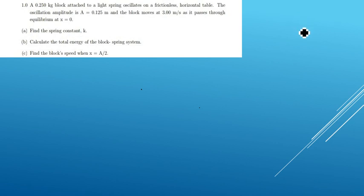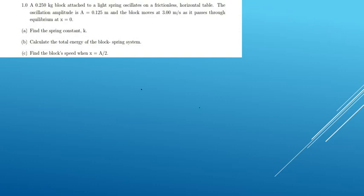Welcome to another tutorial. Today we'll be solving a question in physics under simple harmonic motion, seeing how we can apply the topic and how to solve these questions. The problem says: a 0.25 kg block attached to a light spring oscillates on a frictionless horizontal table. The oscillation amplitude is 0.125 meters and the block moves at 3.0 meters per second as it passes through equilibrium at x equals zero.